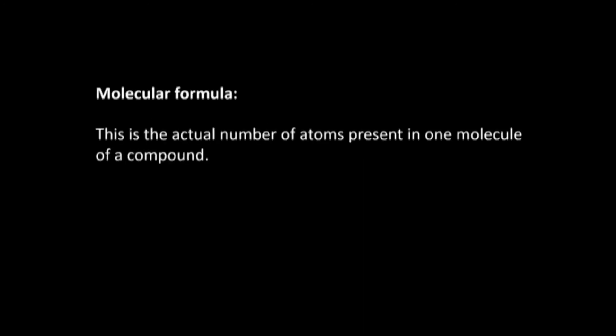Empirical formula is the simplest ratio of the atoms of each element present in a compound. Molecular formula is the actual number of atoms present in one molecule of a compound. Two key points: it gives the actual number of atoms, and it refers to one molecule of the compound.